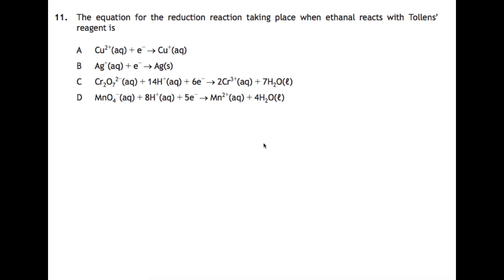We're looking at question 11 and the equation for the reduction reaction taking place when ethanol reacts with Tollens reagent. If Tollens is being used, then we are oxidizing the ethanol, so ethanol will become ethanoic acid. But the Tollens itself will be reduced because it's an oxidizing agent. The Tollens reagent is the silver mirror test, so when you're using Tollens reagent, you are producing silver, and silver is Ag, so your answer here is B.